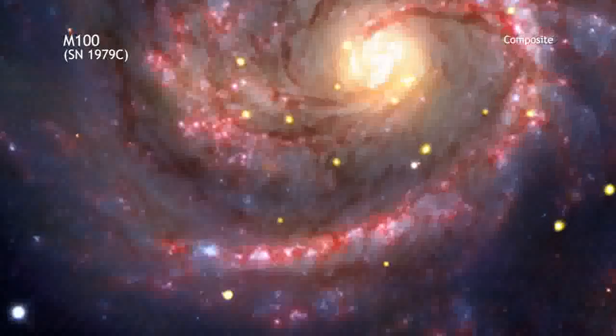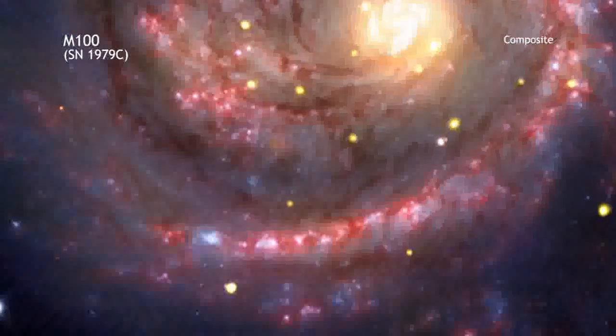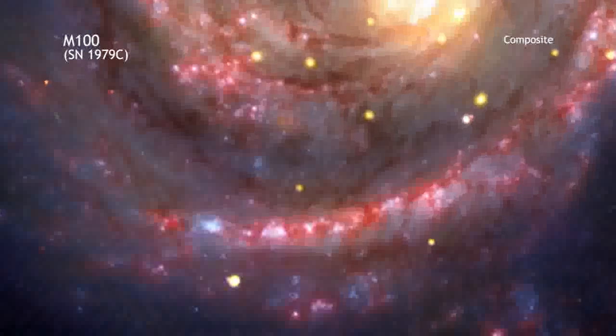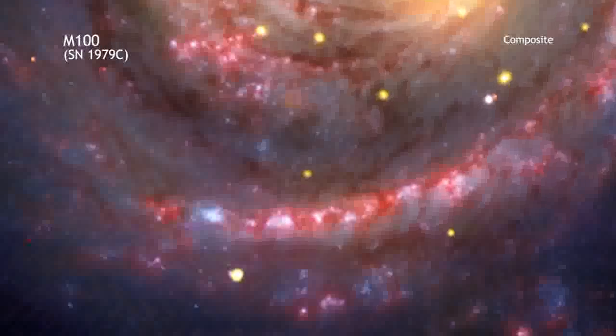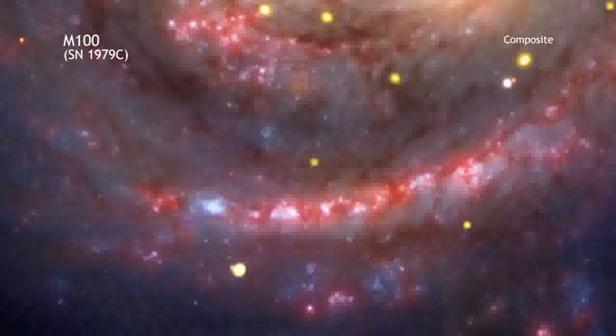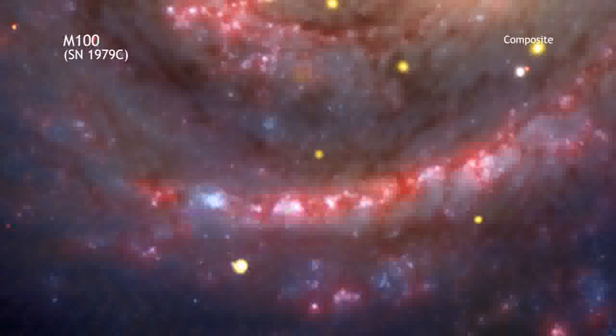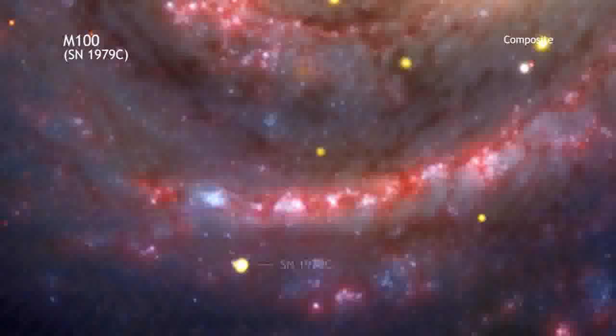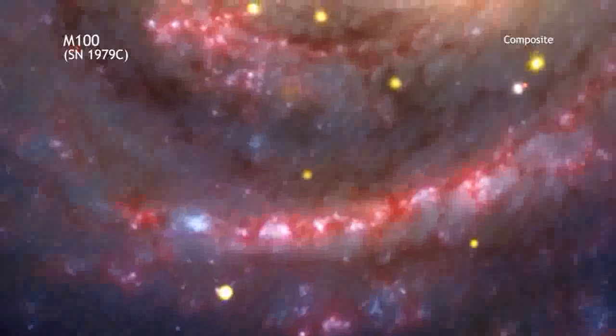The youngest known black hole in our cosmic neighborhood may have been found using NASA's Chandra X-ray Observatory and other telescopes. Evidence for this very young black hole was found in a supernova called 1979C, seen to explode about 30 years ago.